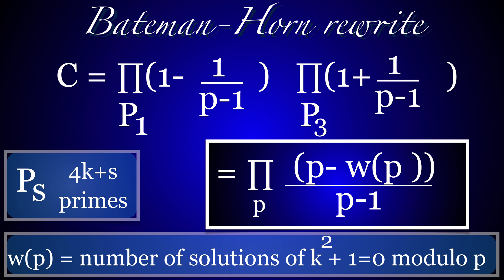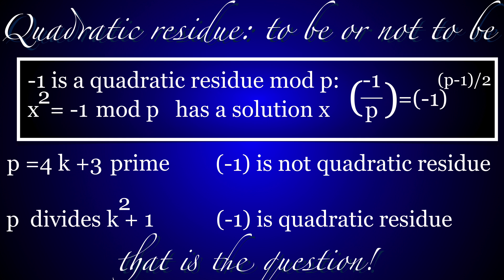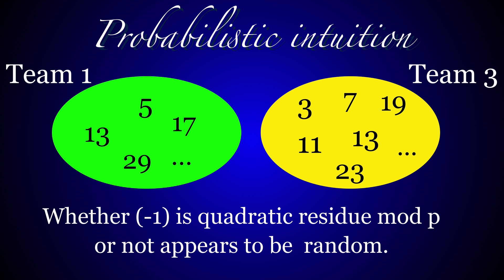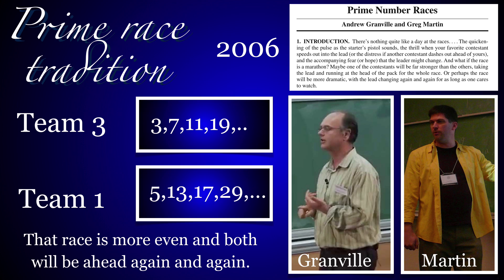This statement is equivalent to what we just saw. But the intuition has been pushed further by others like Bateman and Horn. One can rewrite the constant as a product over all primes involving the number Wp, which tells how many solutions the equation k²+1≡0 has modulo p. There are two solutions or zero solutions. This leads to the question whether -1 is a quadratic residue or not—to be or not to be, that is the question. If p=4k+3, then -1 is not a quadratic residue, or if p divides k²+1, then -1 is a quadratic residue. This leads to team 1 and team 3, the primes of form 4k+1 and 4k+3, which seem pretty random.